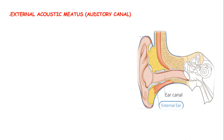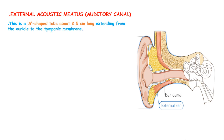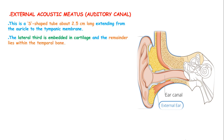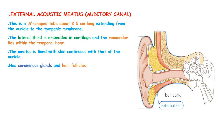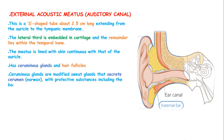The external acoustic meatus, known as the auditory canal, is an S-shaped canal or tube about 2.5 cm long, extending from the auricle to the tympanic membrane. The lateral third is embedded in cartilage and the remainder lies within the temporal bone. This meatus is lined with skin continuous to that of the auricle, and it has ceruminous glands and hair follicles.